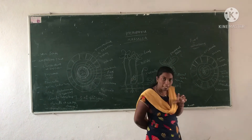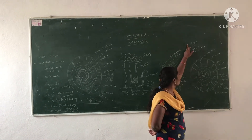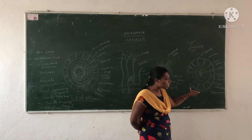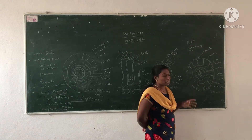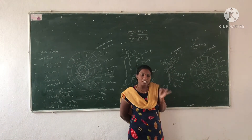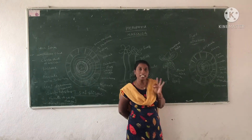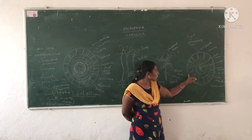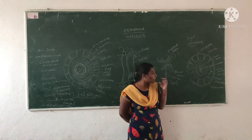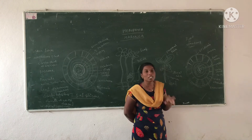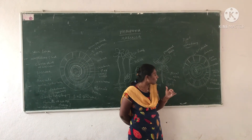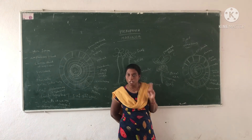Now coming to the anatomy. First, observe the root anatomy by taking a T.S. of the root. The root shows three main regions: epidermis, cortex, and stele. The epidermis is a single layer; some developed roots show a two-layered epidermis. The second region is the cortex, which is differentiated into three regions: outer cortex, middle cortex, and inner cortex.